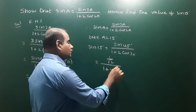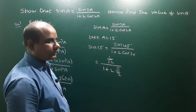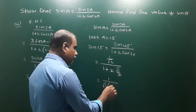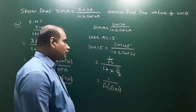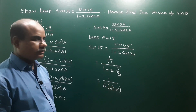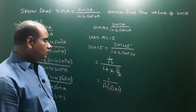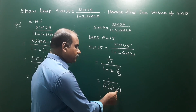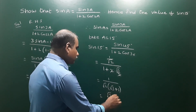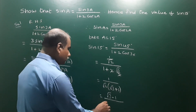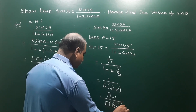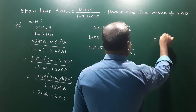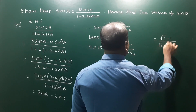sin 45 is 1 by root 2, and cos 30 is root 3 by 2. So we get (1/√2) divided by (1 plus root 3). The 2s cancel, giving 1 divided by root 2 into (root 3 plus 1). We rationalize by multiplying numerator and denominator by the conjugate (root 3 minus 1).